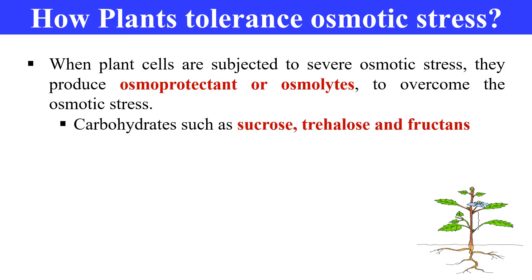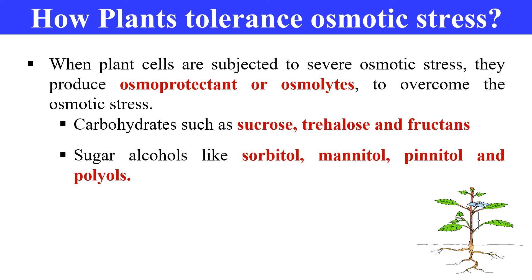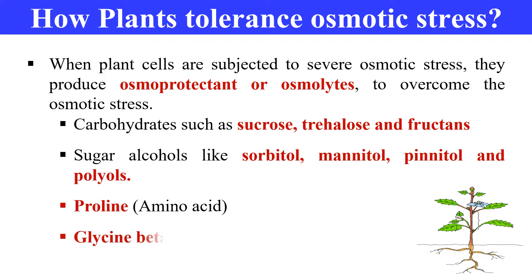These osmoprotectants or osmolytes include carbohydrates, for example sucrose, trehalose, and fructans; sugar alcohols like sorbitol, mannitol, and pinitol; and amino acids which include proline and glycine betaine. These are examples of osmoprotectants which are produced inside the cells under natural conditions — the plants make them themselves to tolerate abiotic stress.